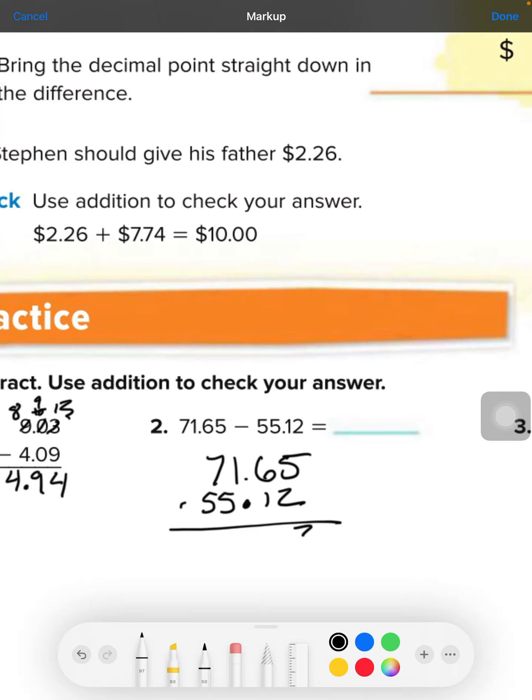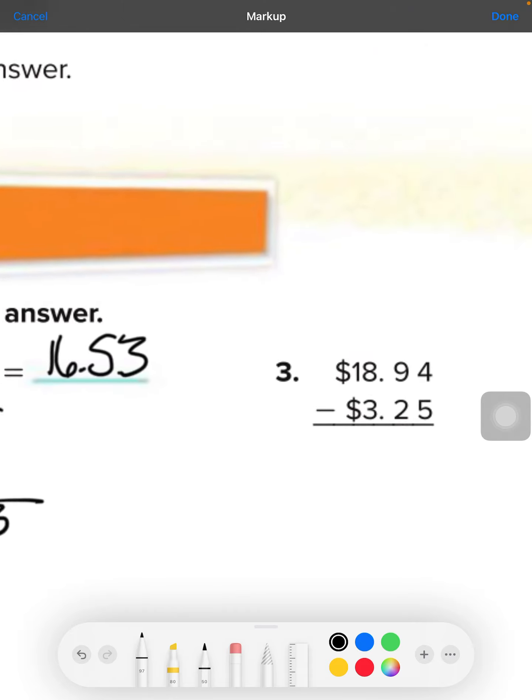Now we can take 2 from 5. That will be a 3. 6 minus 1 is 5, decimal. But, however, we cannot take 5 from 1, so we're going to have to borrow and regroup. That will be 11. And 5 will go into 11. 6 will be 6 numbers between those 2, and 6 minus 5 is 1. So our answer is going to be 16.53.